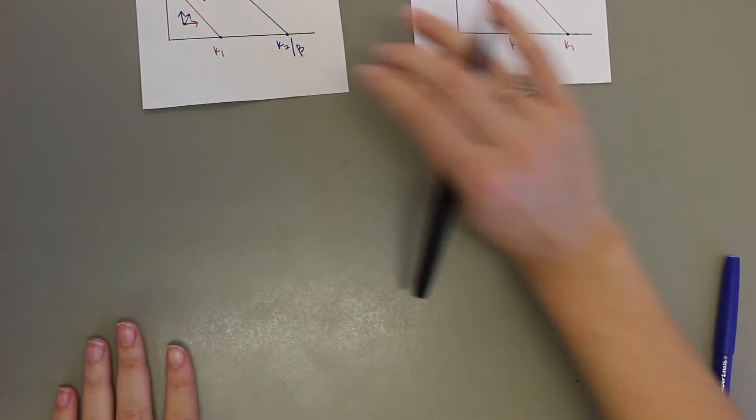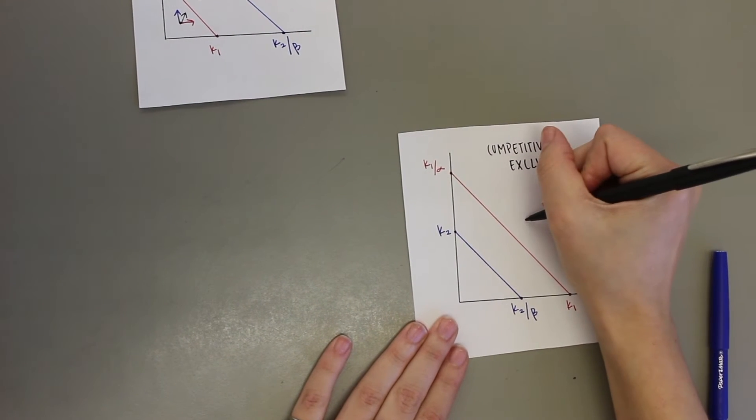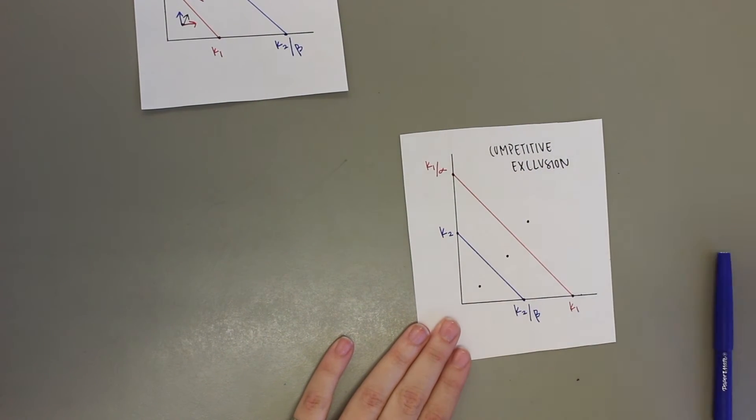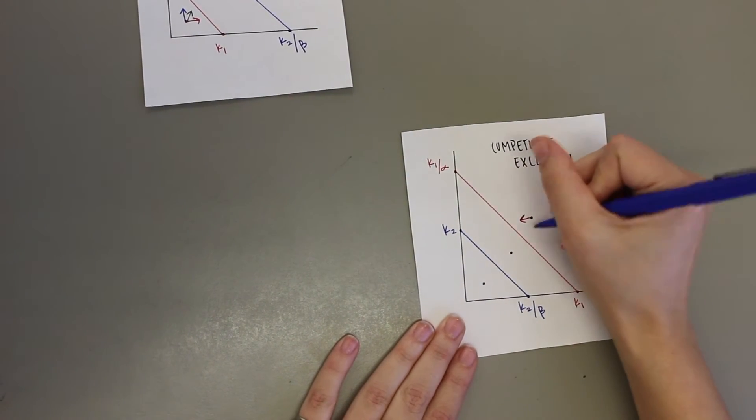In the opposite situation, K1 and K1 over alpha will lie outside K2 and K2 over beta. In this case, species one will outcompete species two. If the populations are above species one carrying capacity, then both species populations will decrease.